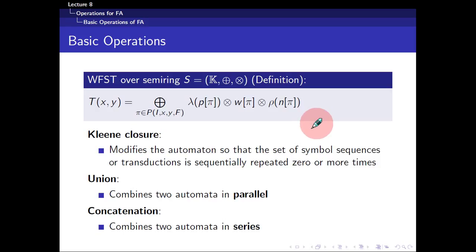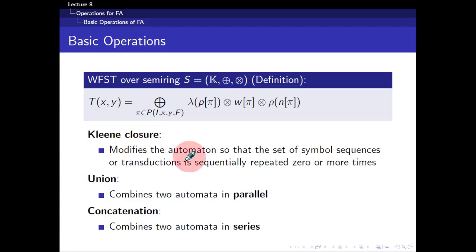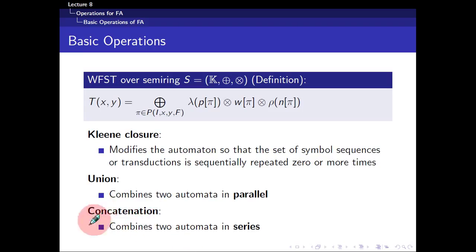Now let's move on to the six basic operations. Suppose you are given a transducer with x as input and y as output. The first operation is known as the Kleene closure — if you have an unclosed transducer, it joins the end state back to the initial state, so the set of symbol sequences or transductions is repeated sequentially. A union is to combine two automata in parallel, whereas a concatenation is to combine two automata in series.